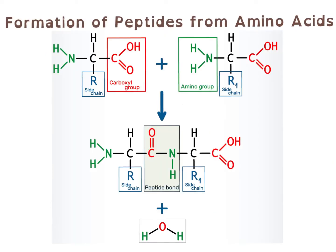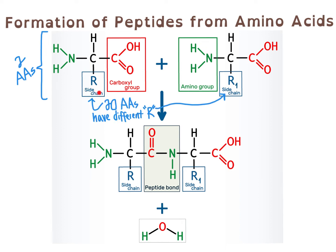Now let's apply that general reaction information to the specific example of forming peptides from individual amino acids. At the top of the screen, we see a couple of different amino acids, which we recognize because they have the carboxyl group and the amine group in the same molecule with one carbon separating those two groups. That particular carbon has the so-called R group — the side chain that distinguishes amino acids from one another. There are 20 different R groups representing the 20 common amino acids. Here, two amino acids are reacting with one another, with their side chains referred to as R and R1.